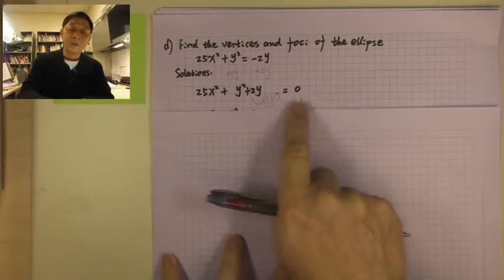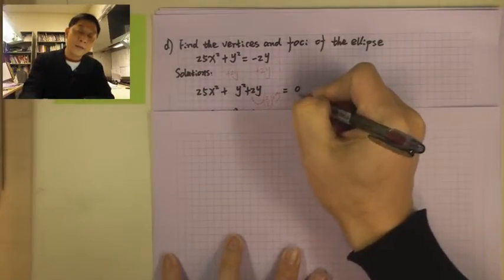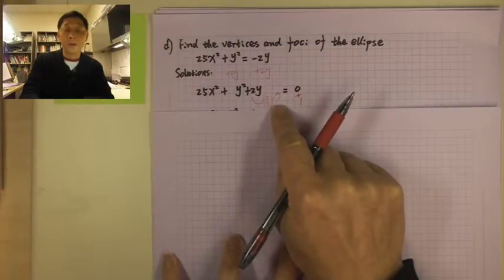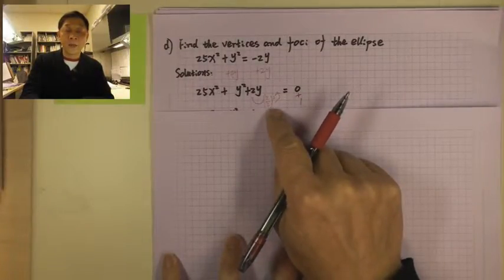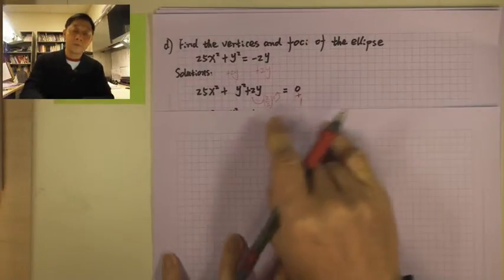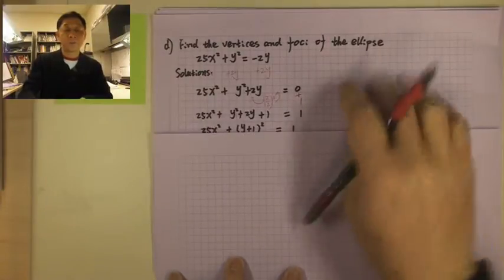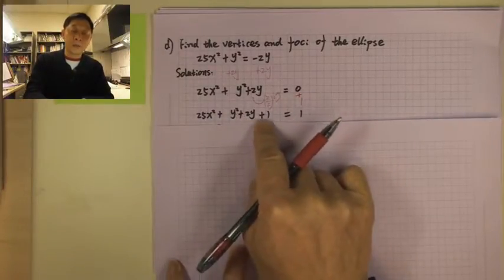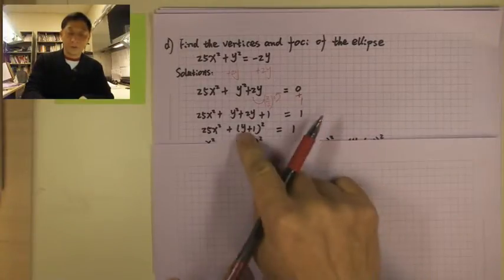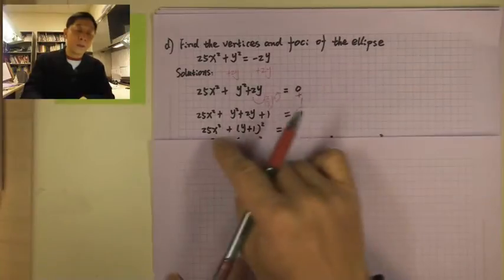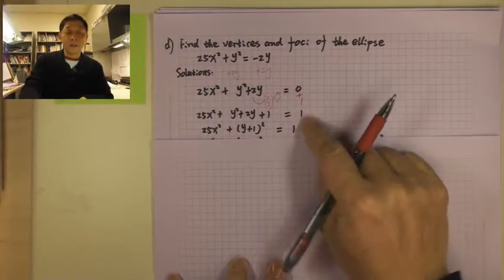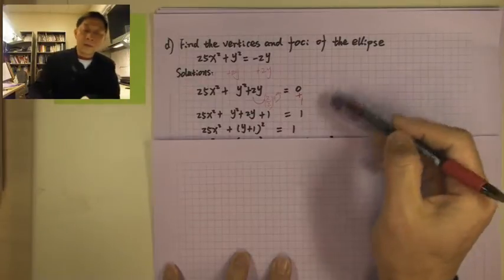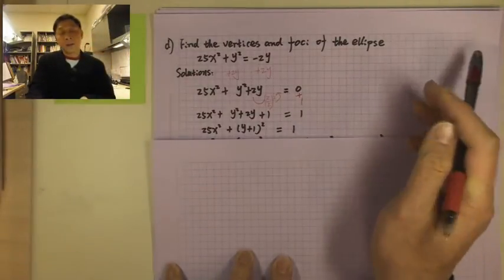If you add 1 on the left, the right-hand side also has to add 1. That's where the 1 comes from: 2 divided by 2 is 1, squared is still 1. So add 1 on both sides. Then y squared plus 2y plus 1 is a complete square, which is (y + 1) squared. Left-hand side is 25x squared plus (y + 1) squared, and the right-hand side is 0 + 1 = 1.